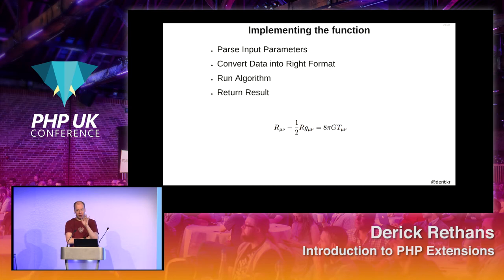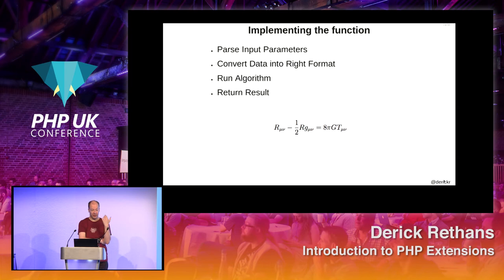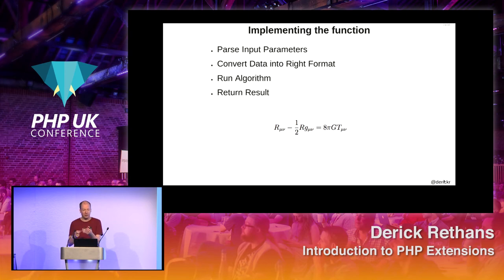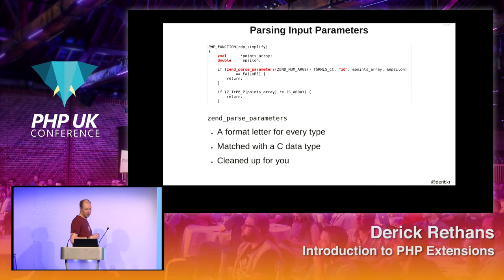So far what we have seen is all boilerplate — every extension needs all of this and it isn't particularly interesting. But the interesting things are, of course, the function itself — this is where you do all the useful work. There are usually four stages for every function: you parse arguments being passed in from PHP scripts, you convert data from PHP into the right format for libraries, you run the library function, and then you convert the result back to the right data structure to return to the user.